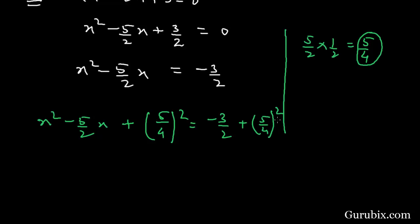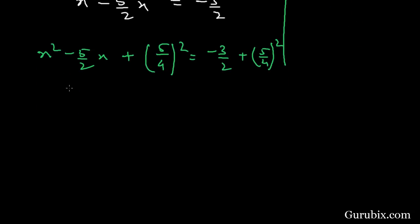Like this. And now we can write these three terms like this: (x - 5/4)². And here it becomes -3/2 + 25/16.